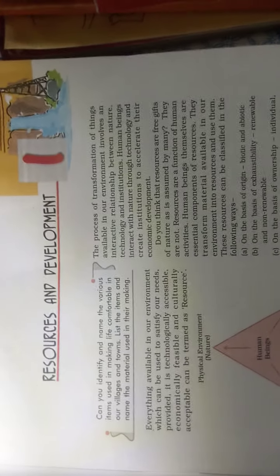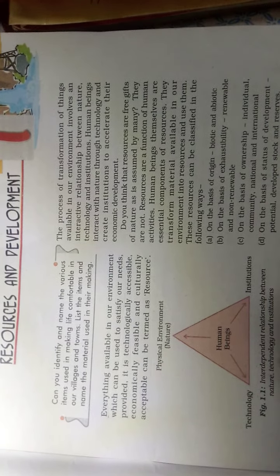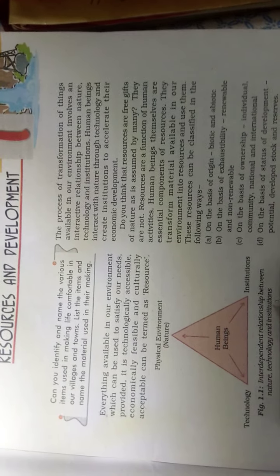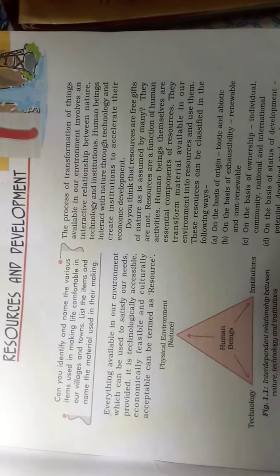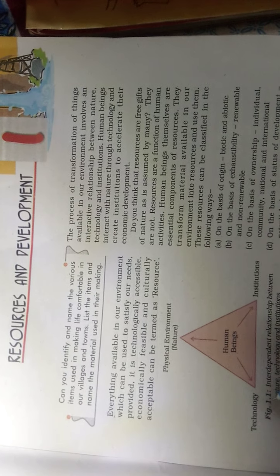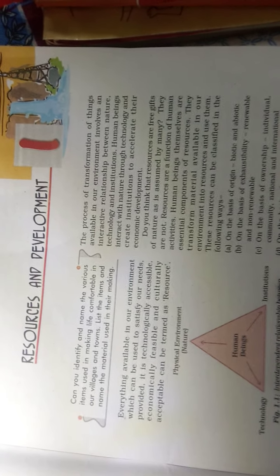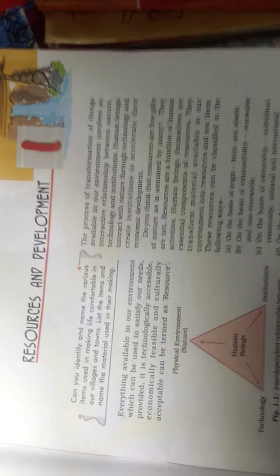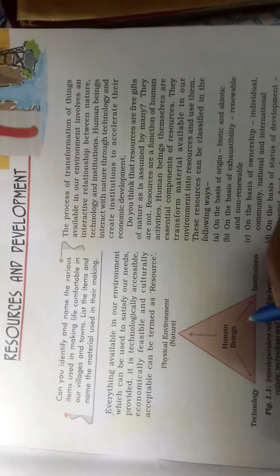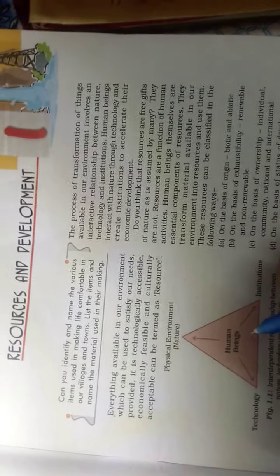Now we will talk about the interdependent relationship between nature, technology and institutions. We as human beings interact with nature, we take help of technology that we have developed by earning knowledge, and we make institutions. With the help of institutions, technology and nature we perform development activities, and we have done economical development and are better civilized now.